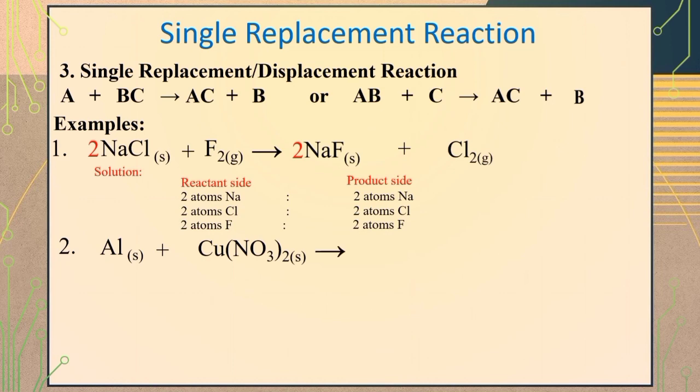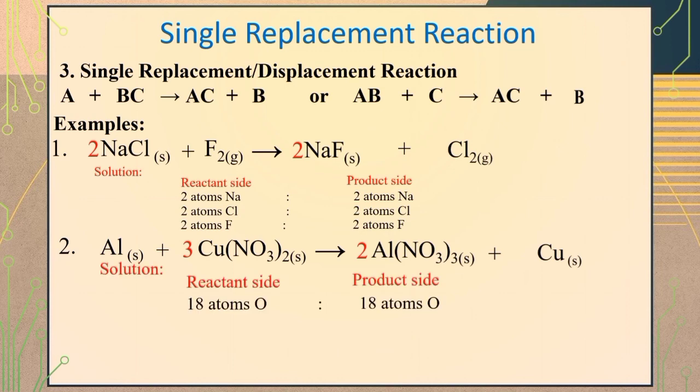In a reaction of aluminum and copper nitrate, aluminum can replace copper since aluminum is more reactive than copper, forming the products aluminum nitrate plus copper. We can balance the equation by putting coefficient of 3 before the chemical formula of copper nitrate and coefficient of 2 before the chemical formula of aluminum nitrate to balance atoms of oxygen with 18 atoms both on the reactant and product side and giving you 6 atoms of nitrogen both on the reactant and product side.